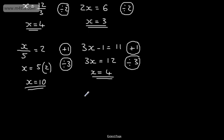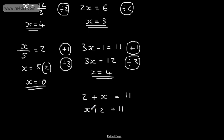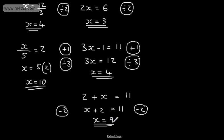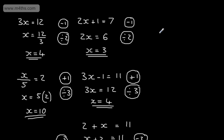Let's say I had the equation 2 plus x is equal to 11. All we would do is get x by itself. This one is written slightly differently, but it doesn't matter — it's the same as x plus 2 equals 11. We would simply subtract 2 from both sides, giving us x equal to 9.